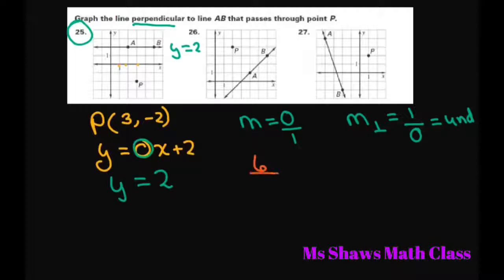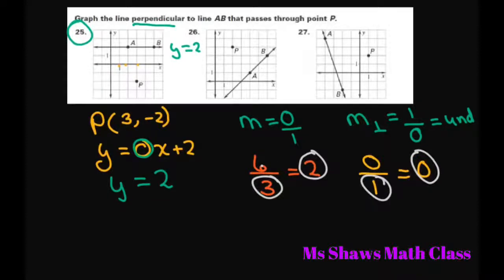If you have 6 divided by 3, we know that equals 2, and that's because 2 times 3 equals 6. If you have 0 divided by 1, that equals 0, because 0 times 1 is 0.